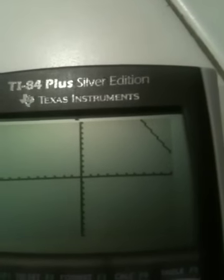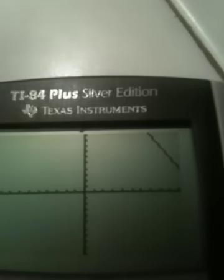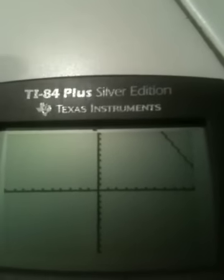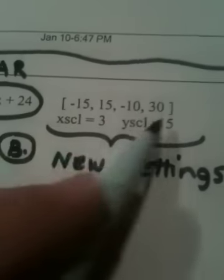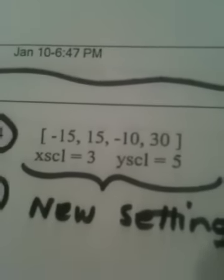Our graph's crossing way up here at 24, but that's not in our window, so how could we possibly view that? So graphing this in a standard window was kind of stupid, but you're learning, and now I've got to adjust my window. What they've asked you to do is to readjust your window settings.